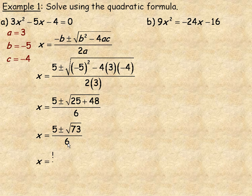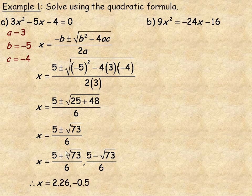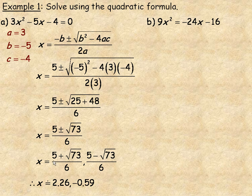Evaluating the two solutions: 5 plus the square root of 73 divided by 6 gives approximately 2.26, and 5 minus the square root of 73 divided by 6 gives approximately negative 0.59. The exact solutions are 5 plus or minus root 73 over 6, and the decimal approximations are 2.26 and negative 0.59.